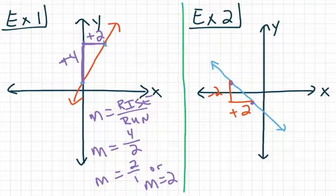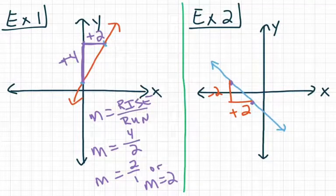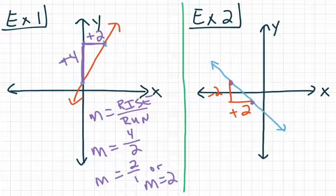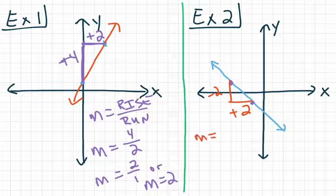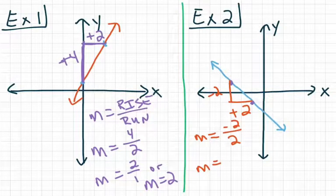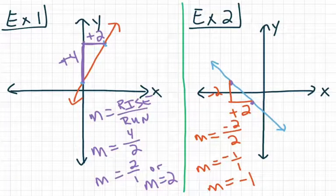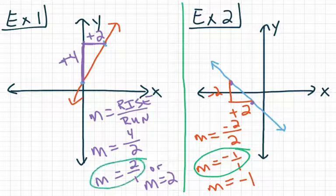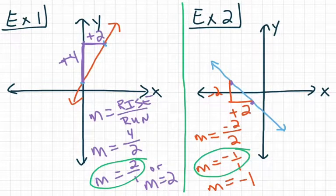I'm going to run to the right 2 units, giving me a value of plus 2. My run should always be positive — if I run to the right, my run will always be positive. If you end up with a negative run, that means you did not start from the point that's further to the left. Start from the point that's further to the left and you will always have a positive denominator, which in my opinion is easier to deal with. So M is equal to negative 2 over positive 2, which simplifies to negative 1 over 1, or our slope equals negative 1. I would encourage you to leave your slopes as a fraction; however, HRW will often ask for answers that look more like negative 1.